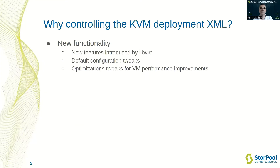First, why is controlling the deployment XML needed? LibVirt is a permanently evolving project, so new features are permanently introduced. Also, the default OpenNebula configurations may not be optimal for some use cases, so small tweaks could be needed here and there. And with changes in the configurations, it is possible to improve the performance of the virtual machines.